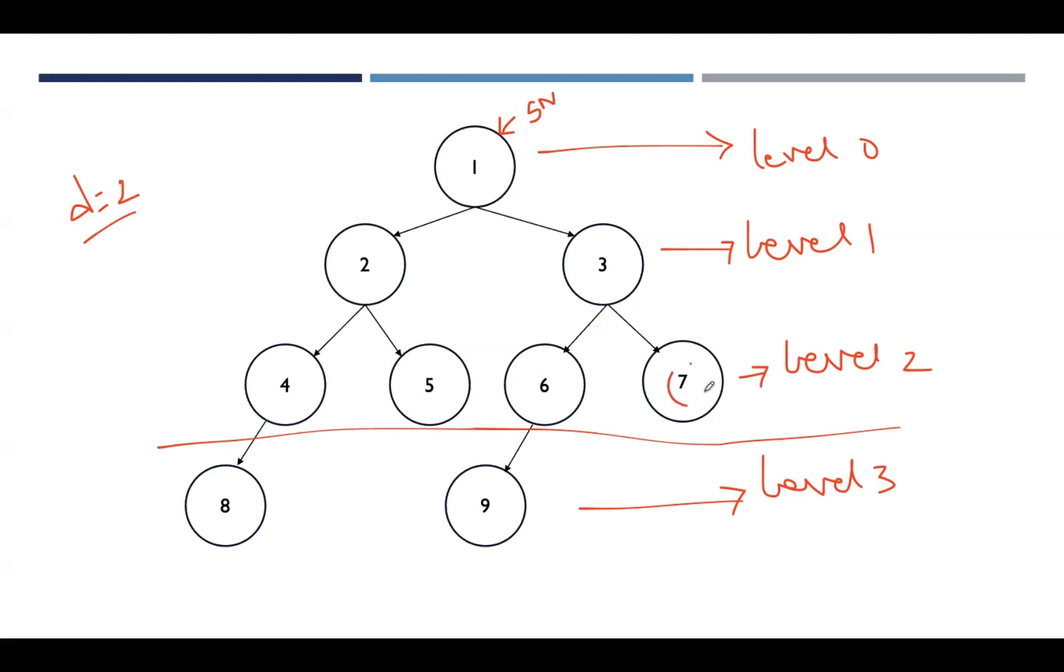Let us take this 7 as a goal node now. We'll use the same procedure which we used in DFS. First, we are starting from 1, and you need to take the adjacent vertices of 1, which are 2 and 3.